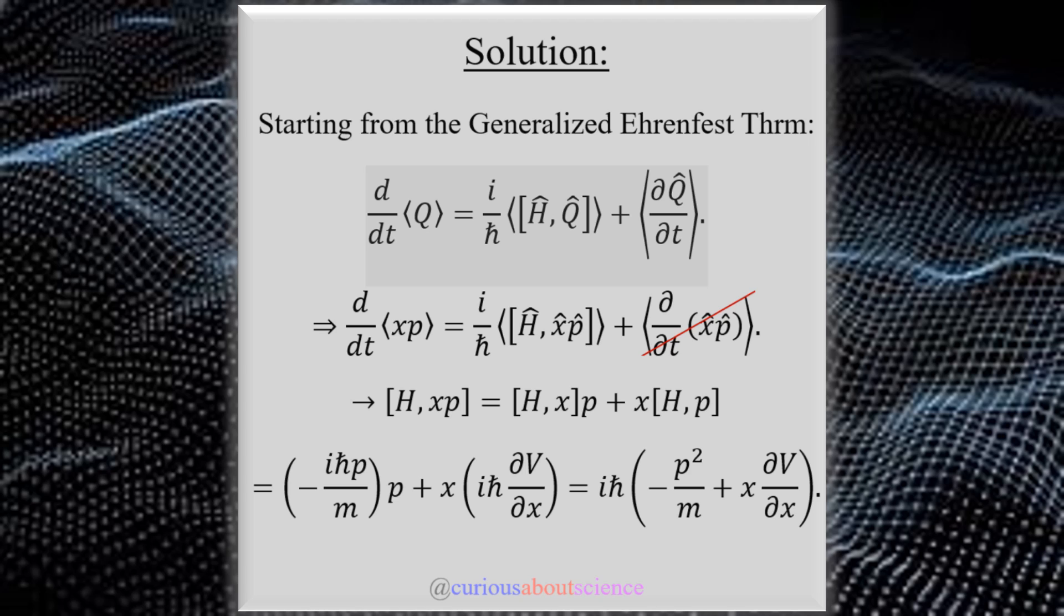So if we start from the generalized Ehrenfest theorem, which is the time derivative of some observable Q is equal to i over ℏ, the expectation value of the commutator relation of the Hamiltonian with the observable plus the time derivative with the expectation of the time derivative of the observable. If you recall in the section that this is almost never a thing, so we could get rid of that to zero.